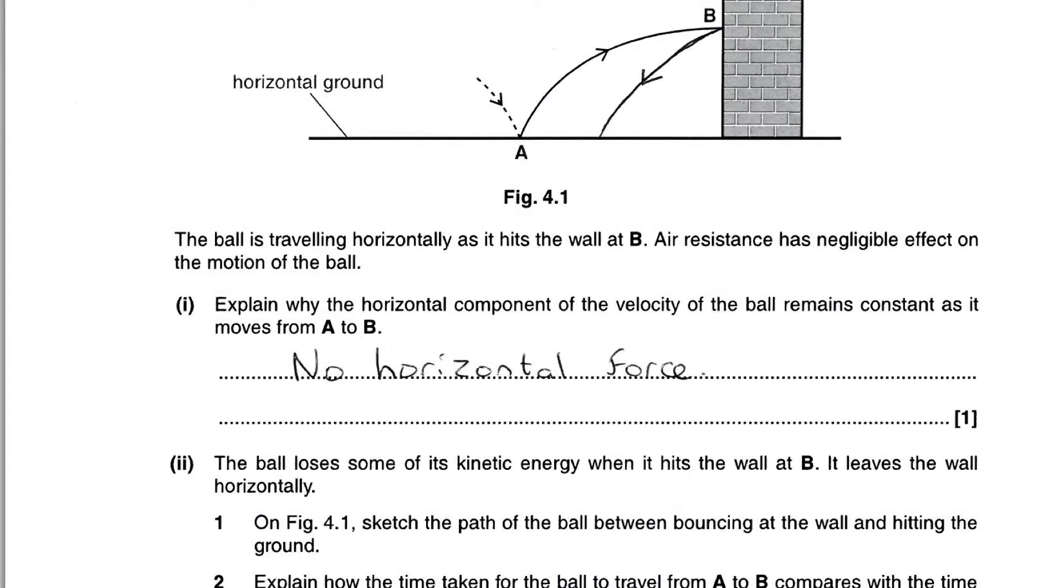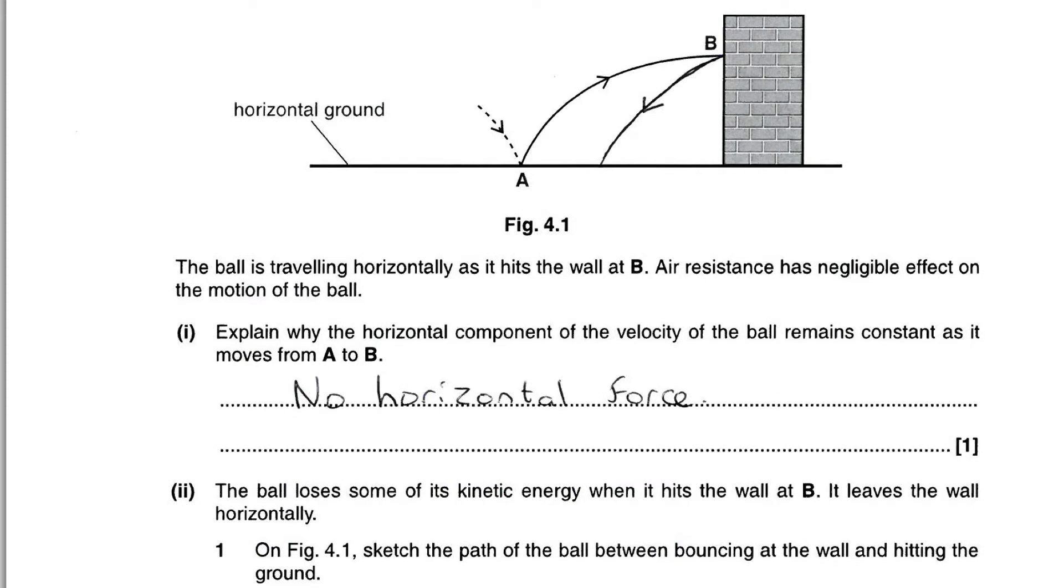Question 4A part 2-1. On figure 4.1, sketch the path of the ball between bouncing at the wall and hitting the ground. First of all, a lot of people may have missed this question due to lack of reading, as there is no answer space. The key to this question is that it says the ball loses some kinetic energy to thermal in the wall, so the ball will not bounce back at the same angle as it did before. As you can see from the diagram, as the ball loses kinetic energy, it will bounce closer to the wall. The line also has to be curved the same curve as the original line to get the marks.